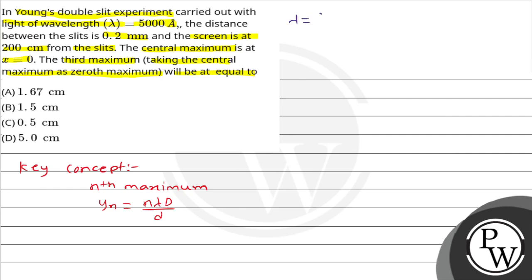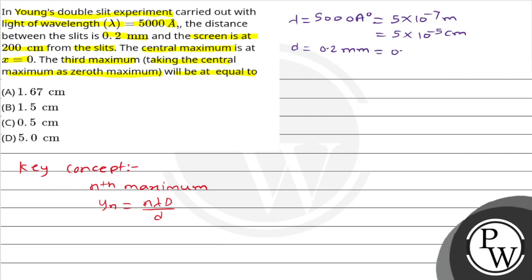Lambda is 5000 Angstrom. Since the answer is required in centimeters, we convert: 5000 Angstrom equals 5 × 10⁻⁷ meter, which equals 5 × 10⁻⁵ centimeter. Similarly, we convert 0.2 mm to centimeter: 0.2 mm equals 0.2 × 10⁻¹ centimeter. Capital D is 200 centimeter as given.